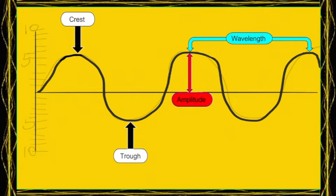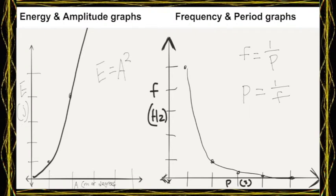It's how long the wave is. On the left it's an energy amplitude graph, on the right it's frequency and period graph.